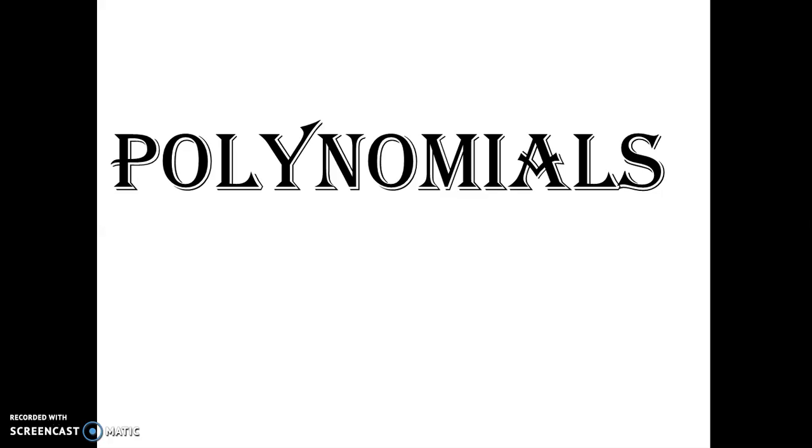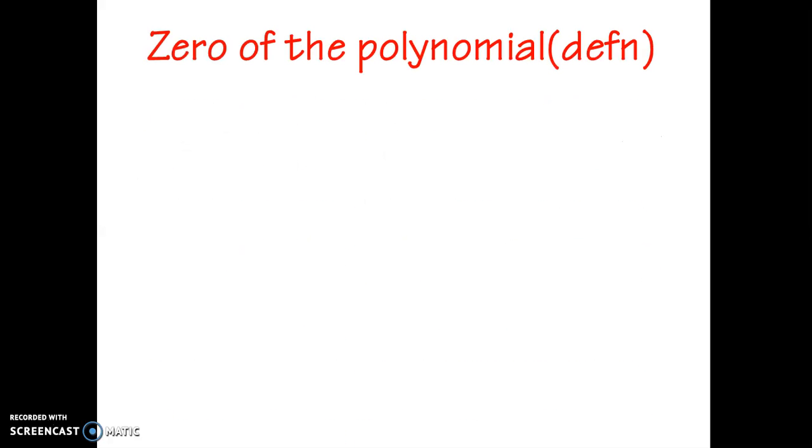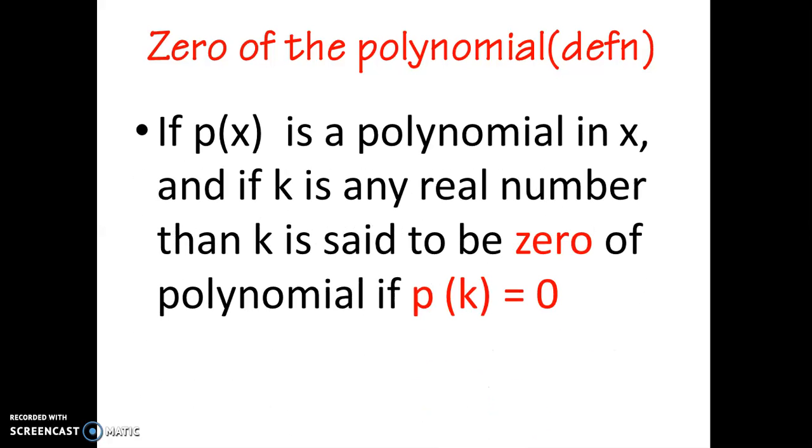So all the CBSE 10 channel students, here I come with all the formulas. Number one, zero of the polynomial. If we have a polynomial that is p of x, then we say that k is the zero of the polynomial if p of k is equal to zero.